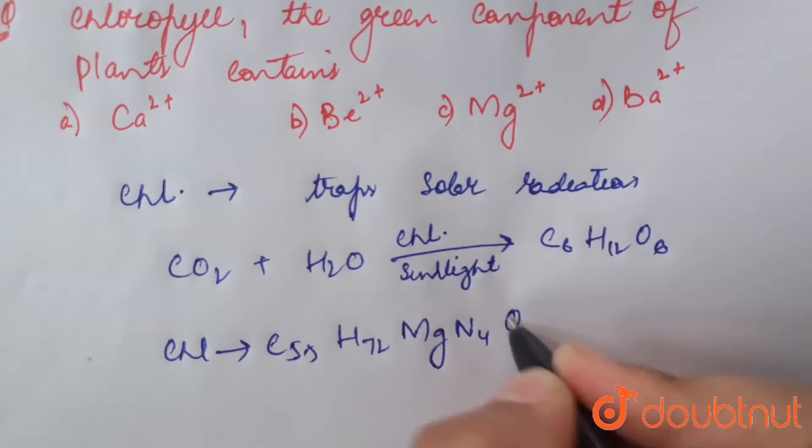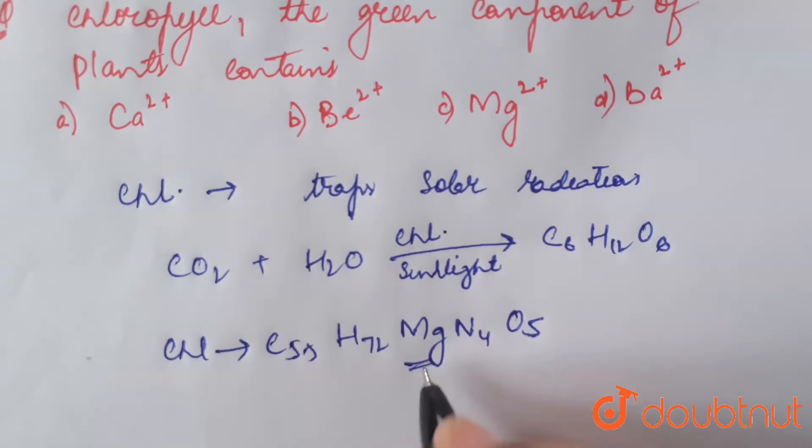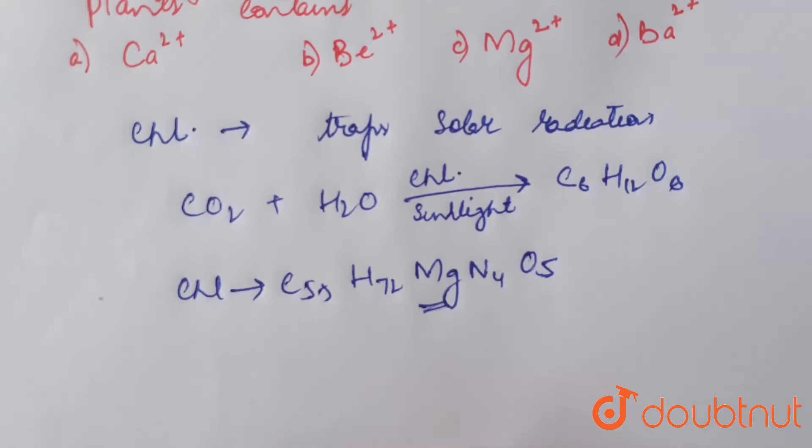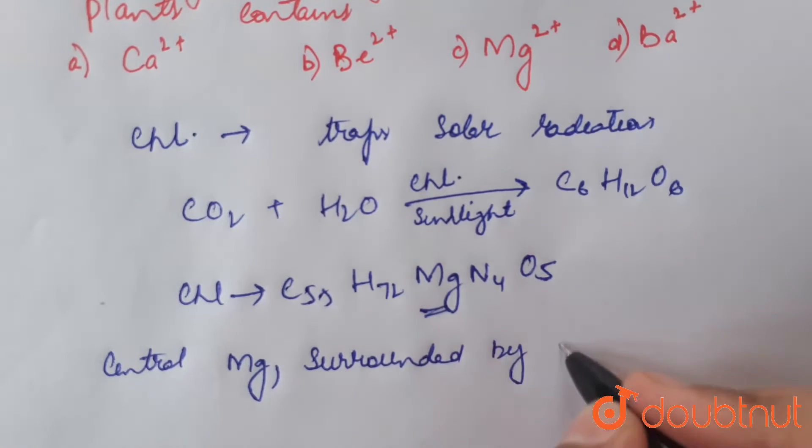N4O5. Clearly, chlorophyll contains magnesium - it contains a central magnesium atom surrounded by nitrogen containing structure called porous green rings.